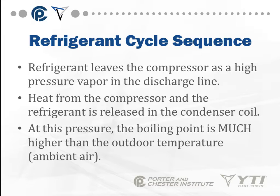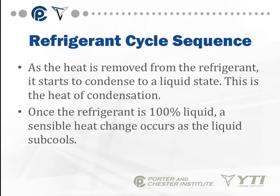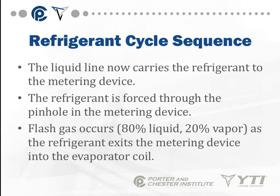Getting back to the refrigerant cycle: refrigerant leaves the compressor as a high-pressure vapor in the discharge line. The heat from the compressor and refrigerant is released into the condenser coil. At this pressure, the boiling point is much higher than the ambient air temperature. As heat is removed — since heat naturally moves from hot to cool — the refrigerant starts to condense into a liquid state; this is the heat of condensation. Once the refrigerant is 100% liquid, a sensible heat change occurs as the liquid subcools. The liquid line carries the refrigerant to the metering device, where it is forced through a pinhole, creating flash gas — about 80% liquid and 20% vapor.